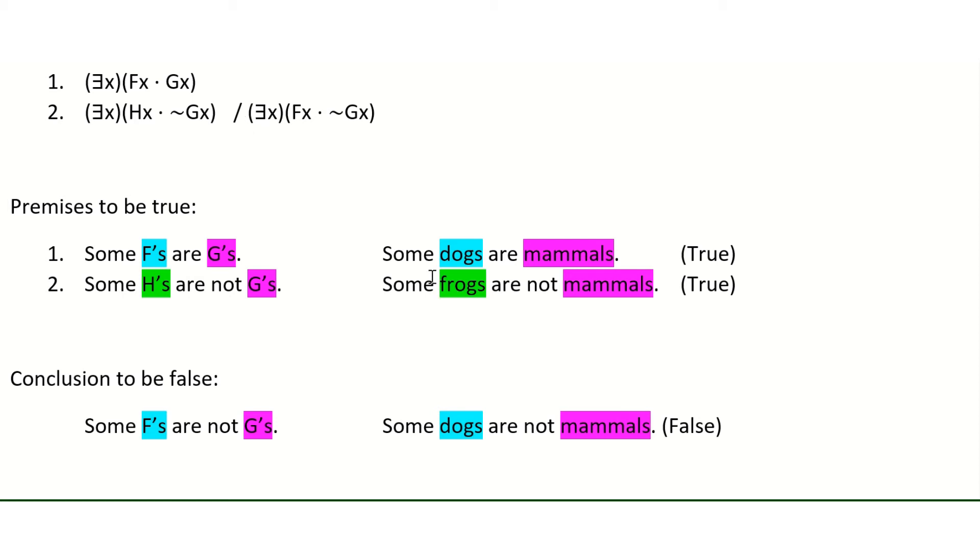And again, this shows that this argument isn't valid because the definition of validity is that it's not possible for the premises to be true and the conclusion false. What I've done with this counterexample is shown how it is possible for the premises to be true and the conclusion false. Precisely, it's possible under these substitutions.